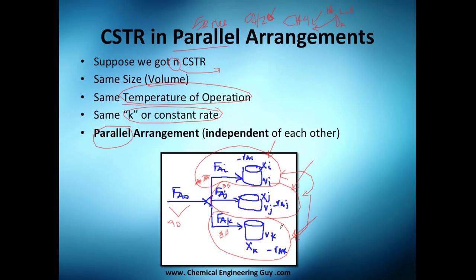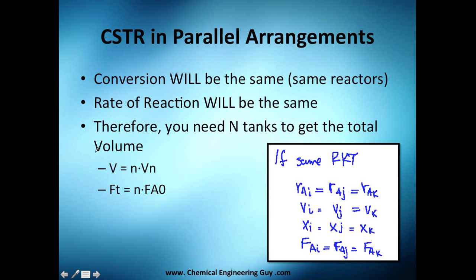Conversion will be the same for all reactors - reactor 1, 2, and 3. The rate of reaction will be the same. Why? Because the rate of reaction is essentially k, which is the same for everyone, times the concentration in case it were first order, or concentration to the second power in case it was second order, or essentially just k if it was to the zero power.